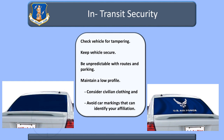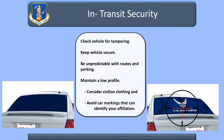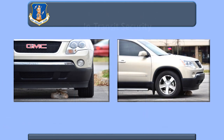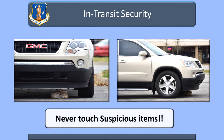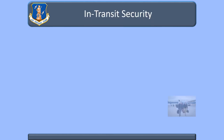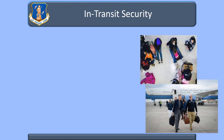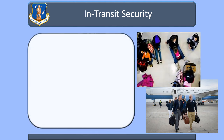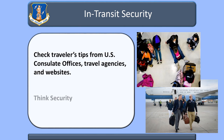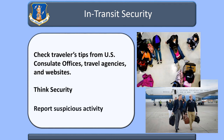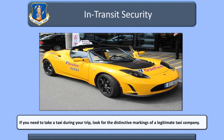When traveling to and from work when TDY or deployed, always be aware of your surroundings. Be unpredictable and maintain a low profile. Before using your vehicle, make sure to conduct an inspection. Never touch the vehicle when conducting the inspection or touch suspicious items. If you choose to use public transportation, have a plan and travel with a group when possible. Be inconspicuous and aware of your surroundings. If you need to take a taxi, look for the distinctive markings of a legitimate taxi company, such as logos, color, or vehicle type.